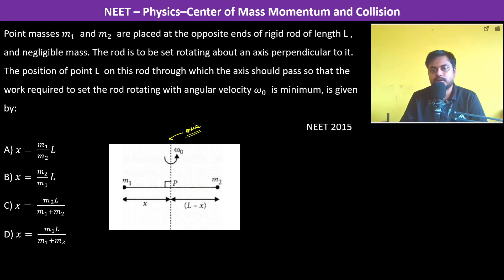When it is rotating with angular velocity ω₀, the rotational kinetic energy is ½ I_yy' ω₀², where y y' represents the axis. So this is the rotational kinetic energy.